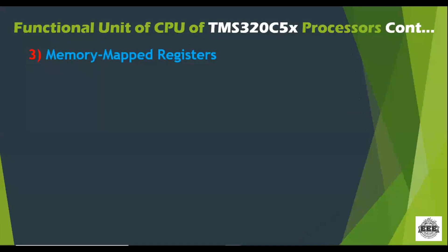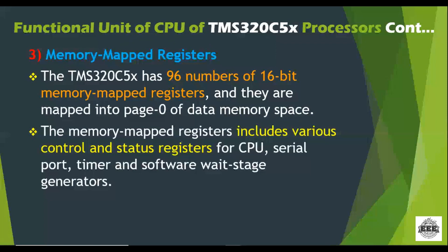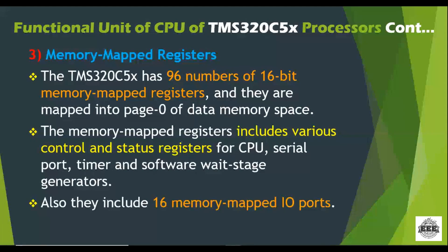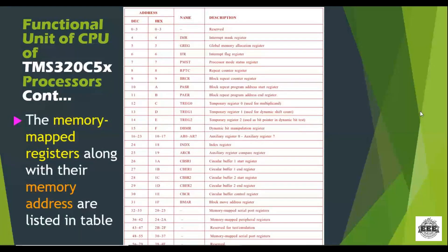The third functional unit is the memory map register. The TMS320C5x has 96 numbers of 16-bit memory mapped registers. These memory mapped registers include various control and status registers of the CPU, serial port, timer, and software wait-state generation. They also include 16 memory mapped I/O ports. The memory map register addresses range from 0 to 79.